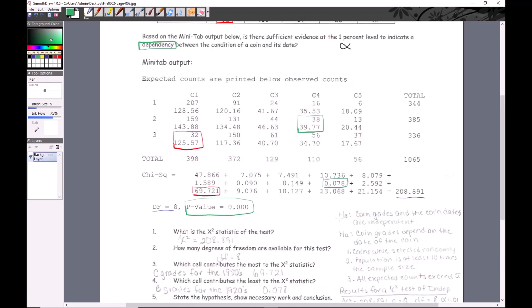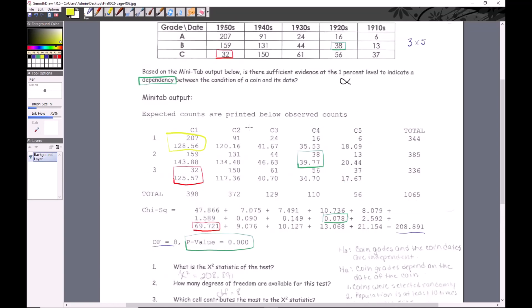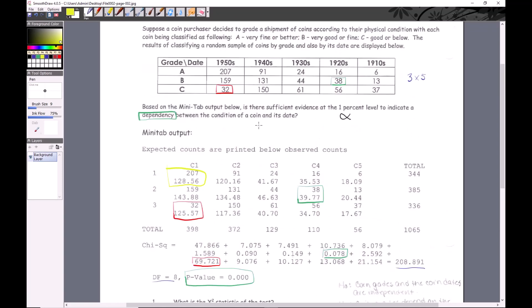It's going to be a little tough - the more cells you have, the harder it is to figure out where all these discrepancies might be. Here's what I would suggest. This is a pretty big discrepancy right here. This would be 1950s graded A. We expected 128.56 and got 207, so there's more than expected. Let's just come down - it's hard with this, but if you look at like these two, it looks like we're getting less than expected. These are the older coins.